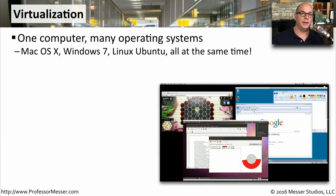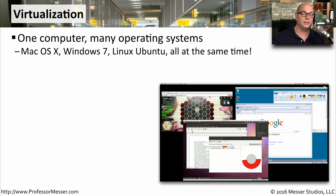Desktop virtualization is a very common way to run multiple operating systems on a single desktop. For example, you could be running Mac OS 10, Windows 7, Linux, and other operating systems all simultaneously on the same screen.